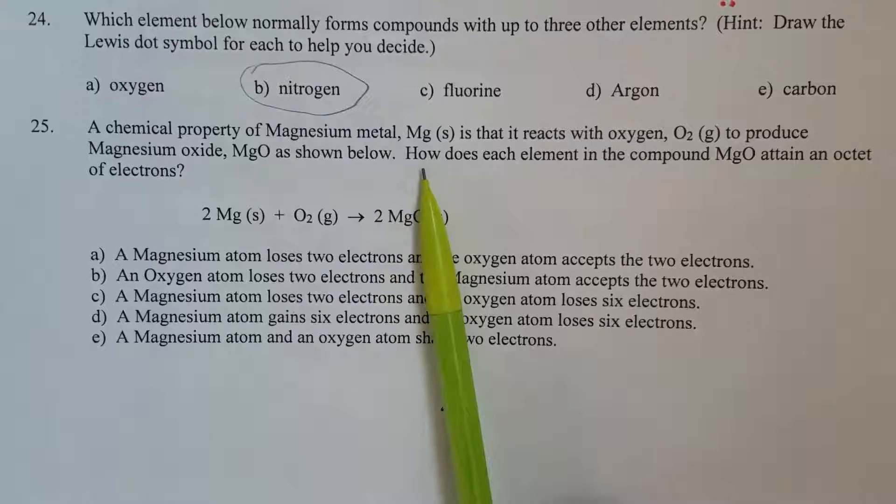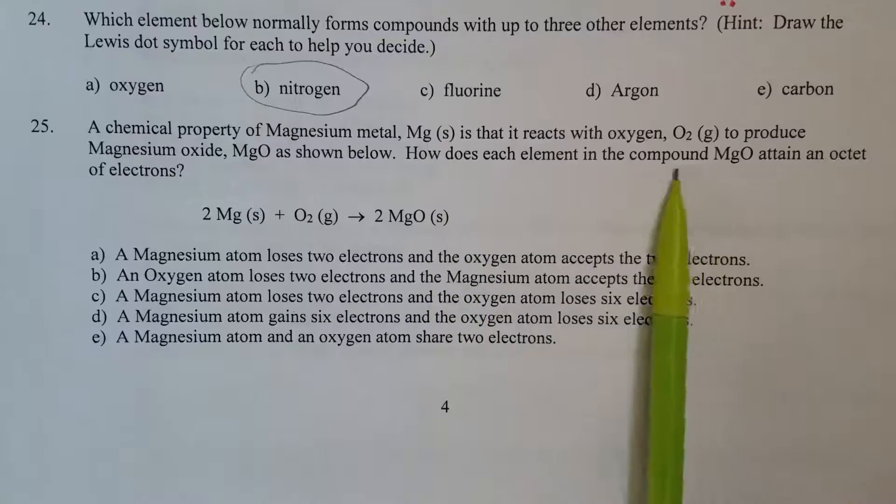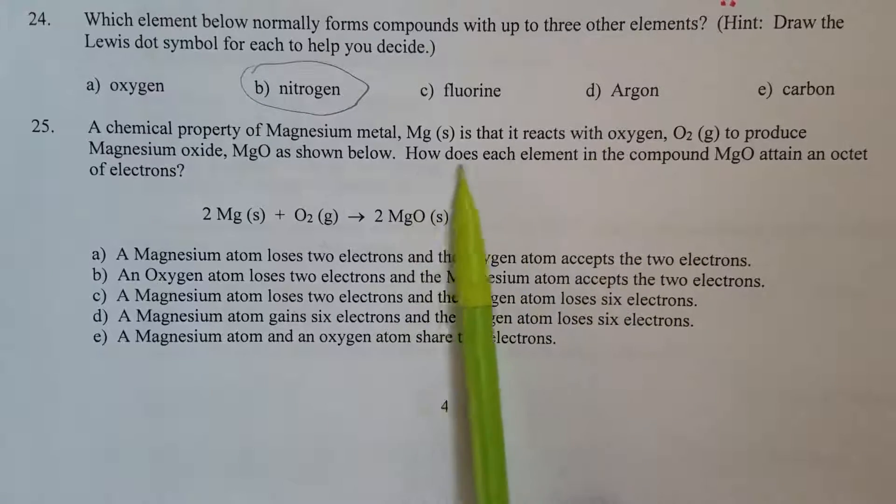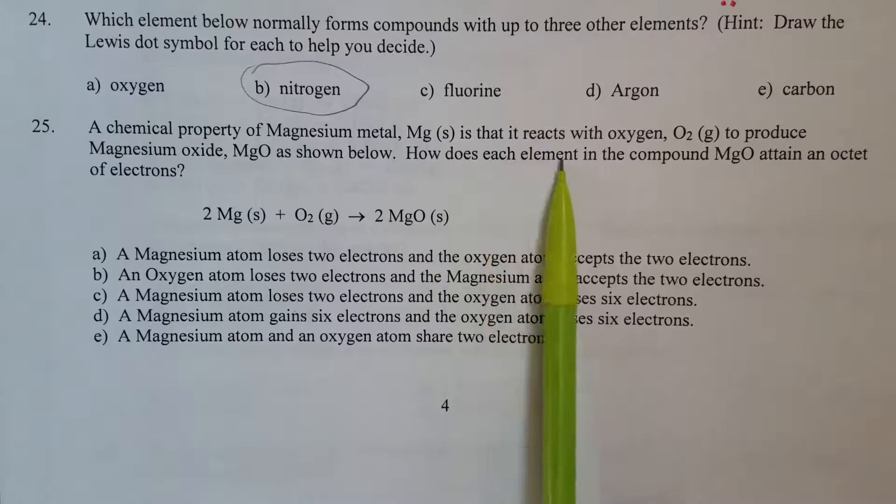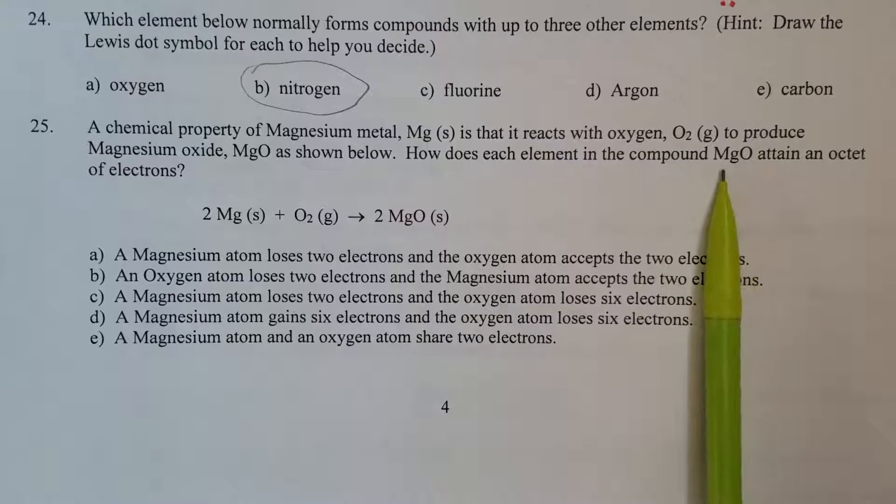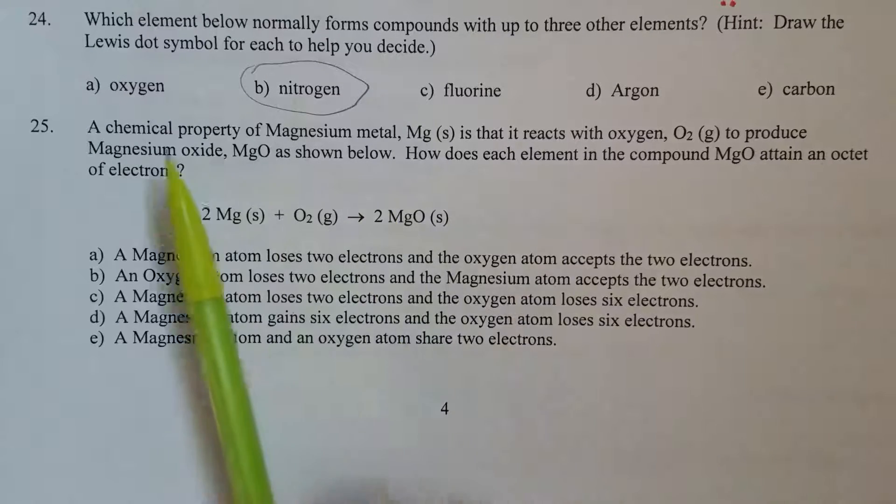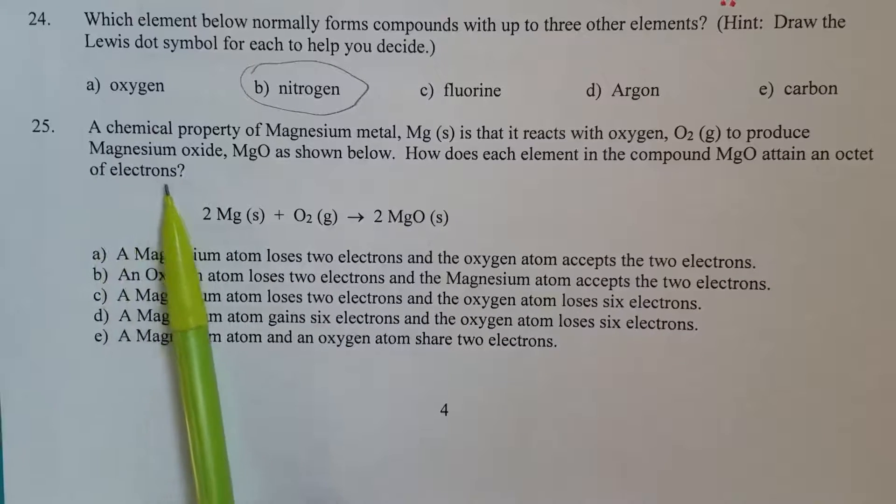So what you need to do here is to explain how each element in the compound MgO, which is magnesium oxide, attains an octet of electrons.